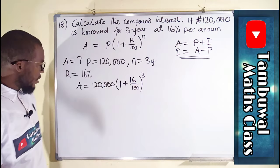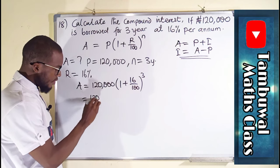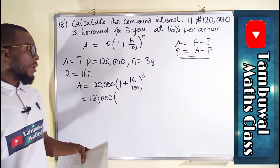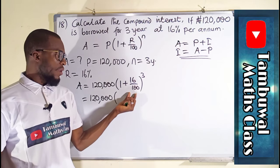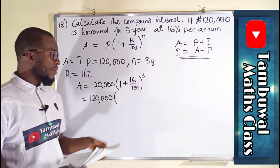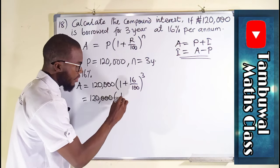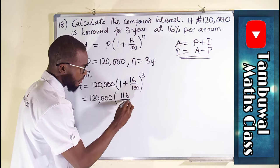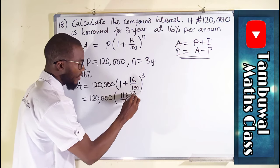Okay, this is equal to 120,000. To simplify this, you can just say 100 times 1 is 100 plus 16 is 116 over 100, to the power of 3.